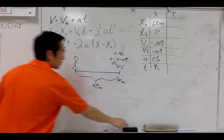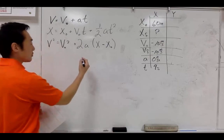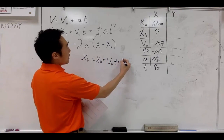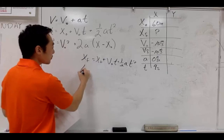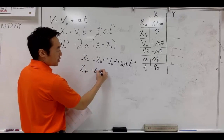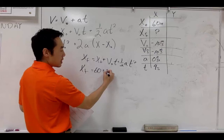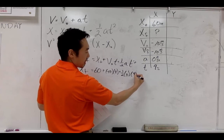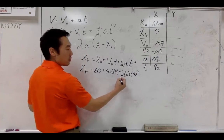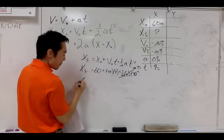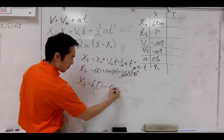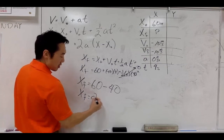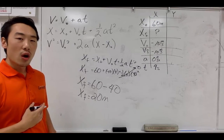Once again, start off with your original equation without any variables filled in. Our initial position was 60, our initial velocity is negative 10, four seconds has passed, our acceleration is zero and four seconds squared — anything multiplied by zero gives us zero. So after four seconds, the dog is 20 meters away from you.